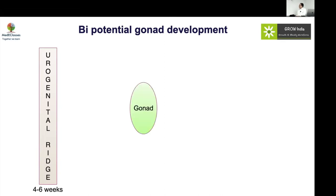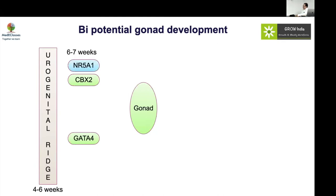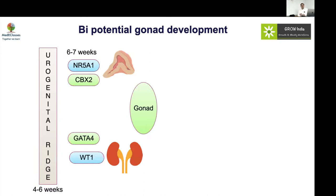All gonads, adrenals, and kidneys develop from the urogenital ridge, which emerges around four to six weeks of life. The bi-potential gonad develops from there, and multiple genes are responsible — CBX2, GATA4, but most importantly NR5A1 (involved in adrenal development) and WT1 (involved in renal development). Whenever you see an individual with atypical genitalia, always consider the possibility of problems in the adrenals and kidneys.